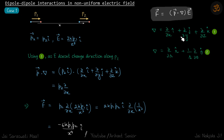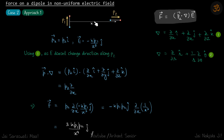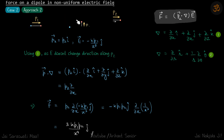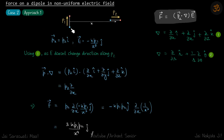Case 2: both dipoles are perpendicular to each other. In Approach 1, we calculate the force on p2 which is on the equatorial position of p1. In Approach 2, we take the second dipole which is on the axial position of p1. These are similar situations but our approach will be different, and we'll see how both give the same answer.